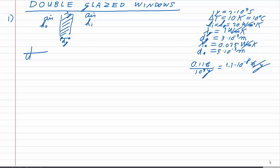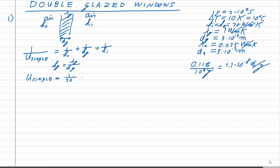For the total heat transfer coefficient we use reciprocal addition: 1/U_single = 1/H_outside + 1/H_glass + 1/H_inside. H_outside and H_inside are both 20 W/m²K. H_glass equals the conductivity of glass divided by the thickness of glass. Plugging in all numbers: U_single = (1/20 + 3×10⁻³/1 + 1/20)⁻¹, which equals 9.7 W/m²K.